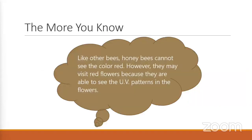Like other bees, they cannot see the color red — I didn't know that; I thought that was pretty interesting. But they can, however, sense UV light. Going back to the ocelli eyes, that's what those are for. So you will see a honeybee visiting a red flower and collecting nectar, and that's all based off of the UV light that she sees. Pretty interesting.